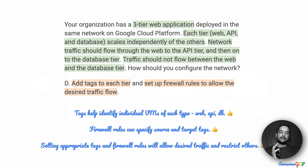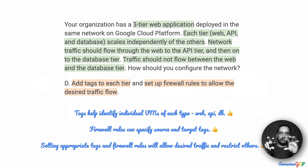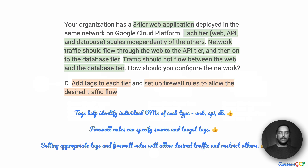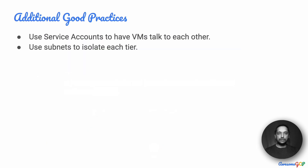To summarize: tags help identify individual VMs of whichever type you choose — in this case web, API and DB. Once you have those tags, you can specify firewall rules based on the target tags. By specifying the source tag and the target tag, you can define that traffic will flow only between VMs with those particular tags. Combining these, we get the desired traffic requirement and are able to restrict all of it. Therefore D is the best option and we will choose that as the final answer.